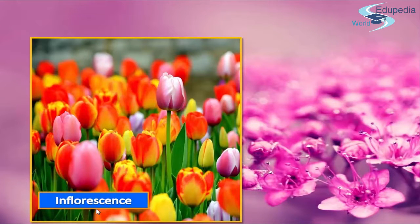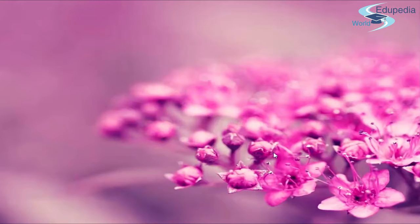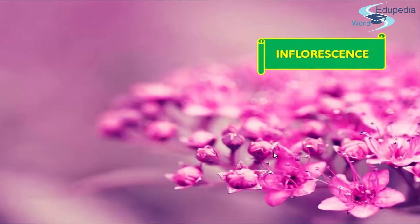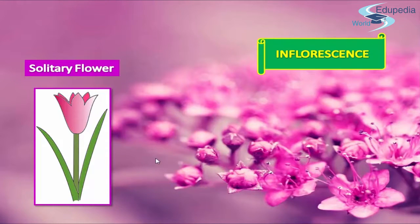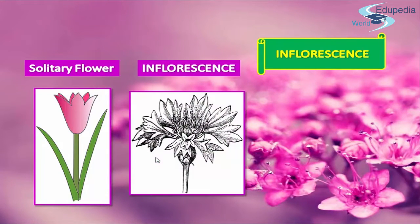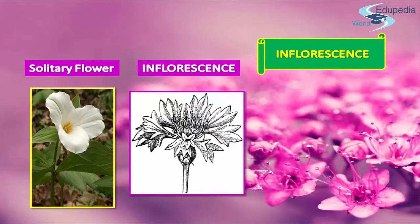In angiosperms, plant flowers are reproductive organs. A flower is a modified shoot and is adapted for the purpose of reproduction. Flowers may be single or they may occur in clusters. As you can see, this is a solitary flower and this is the inflorescence of it.